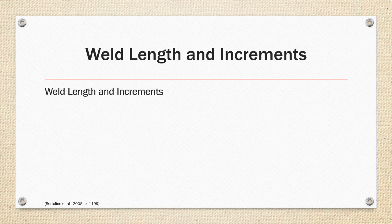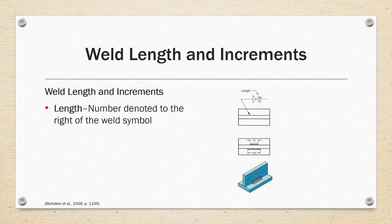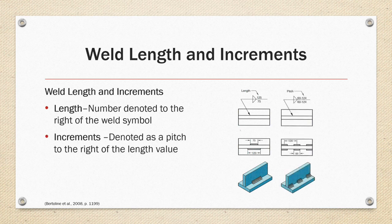Weld length and increments: the length is a number denoted to the right of the weld symbol. In the example, one side of the part has a fillet weld of 125 millimeters on the opposite side that the arrow is pointing to, and a 75-millimeter long fillet weld on the same side as the arrow. Increments are denoted by a number following the length, also known as pitch. The second example shows equally spaced fillet welds on both sides of the reference line that are 60 millimeters long and occur at a pitch of 124 spacing.